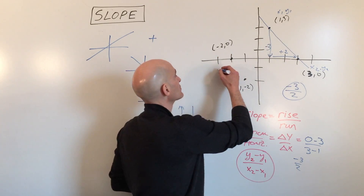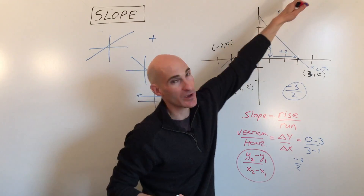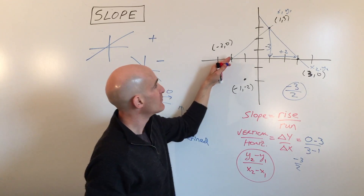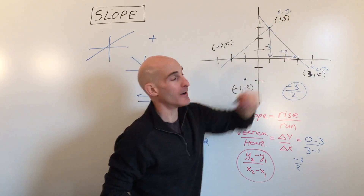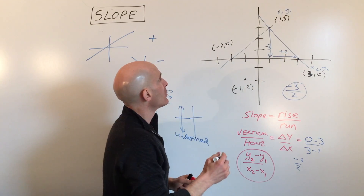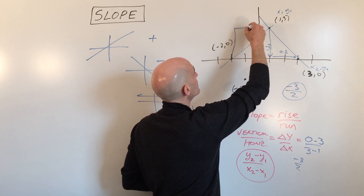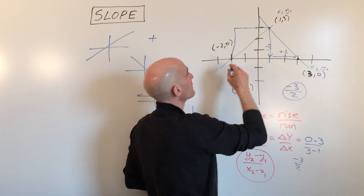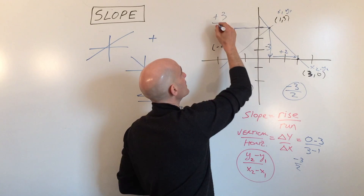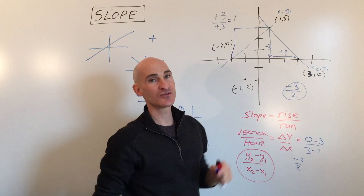For another example, let's find the slope between two points where the line is going up to the right — so we know it's positive. Counting the rise, we go up three, and counting the run, we go right three. Three divided by three gives us a slope of positive one.